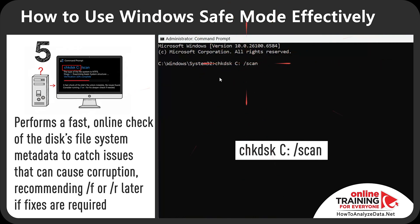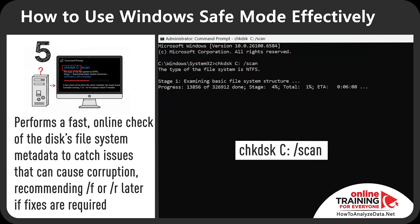Finally, you can run Check Disk on Drive C with the /scan option. This performs a fast online check of the disk's file system metadata to catch issues that can cause corruption, recommending /F or /R later if fixes are required. If you want to go deeper on this topic, make sure to watch the next video.